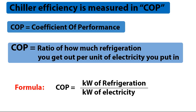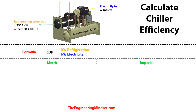Now the formula for this one is very simple. The COP is just the division of the kilowatts of refrigeration divided by the kilowatts of electricity. So we're going to do the calculations on this and we're going to have a look at both the metric and imperial formulas and calculations for that.